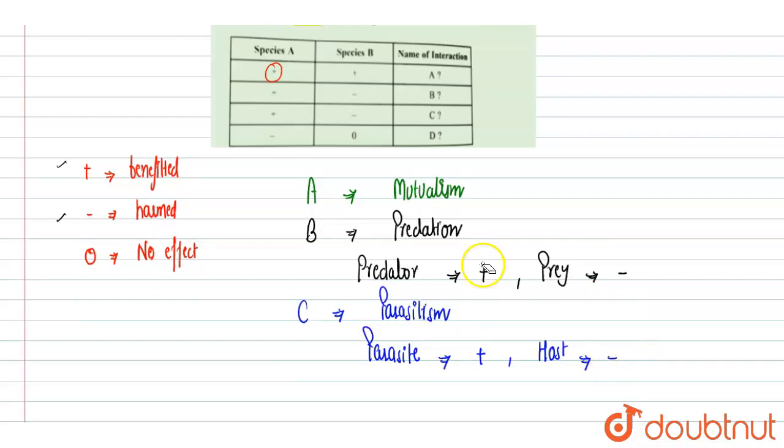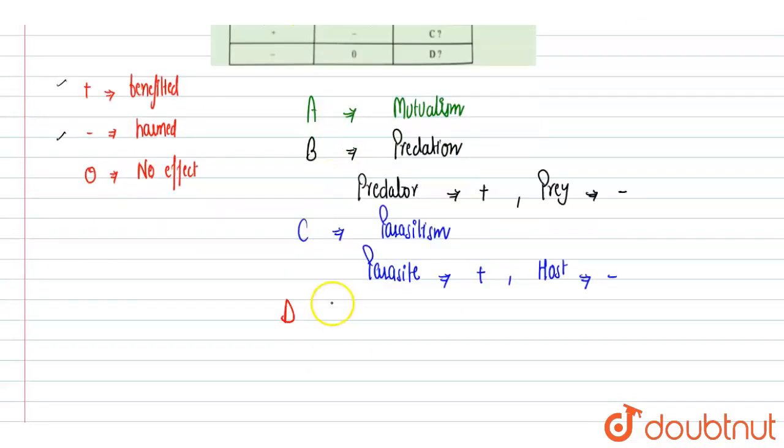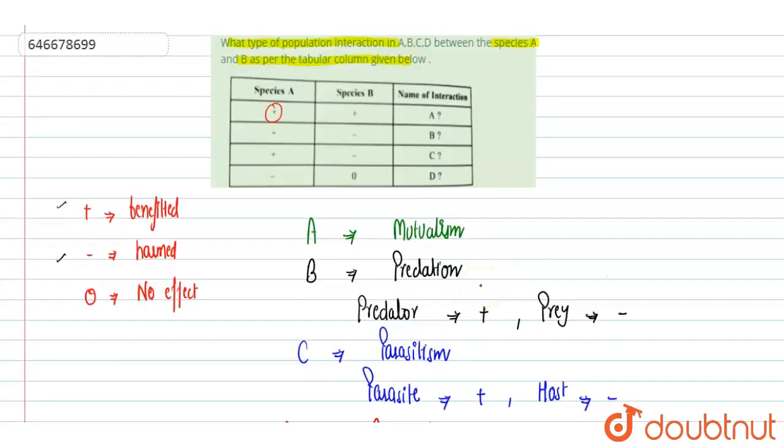Last one is D. Here one species is harmed, negative, and the other is neither benefited nor harmed. So in which one species is harmed and the other is neither benefited nor harmed, that is known as amensalism. So here these are for A, B, C, D interactions. Hope you get it. Thank you.